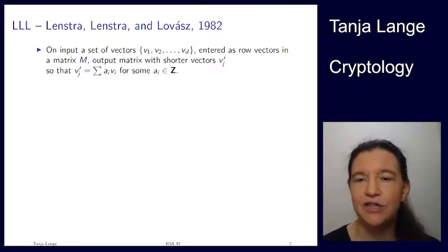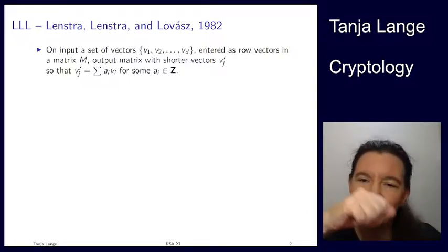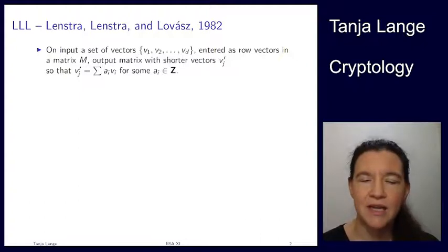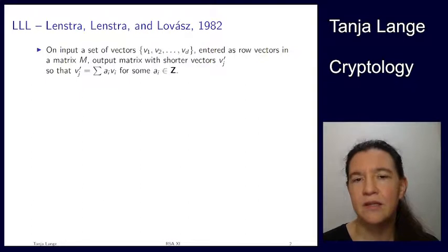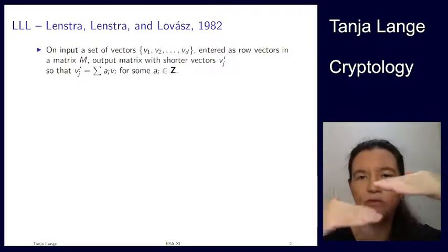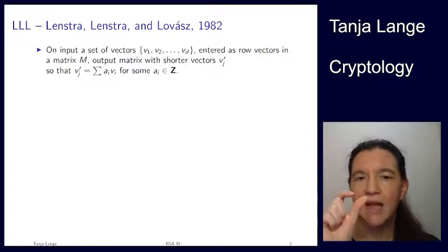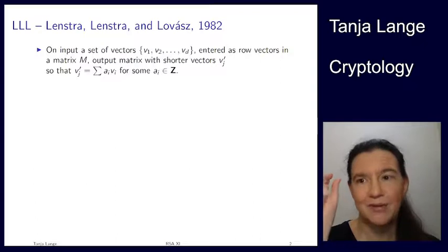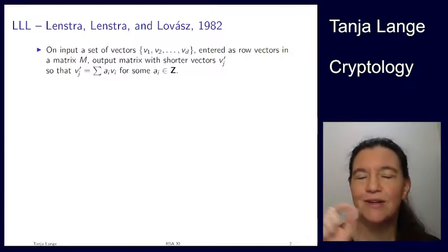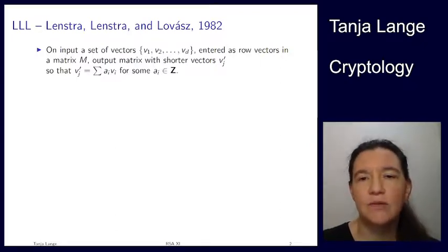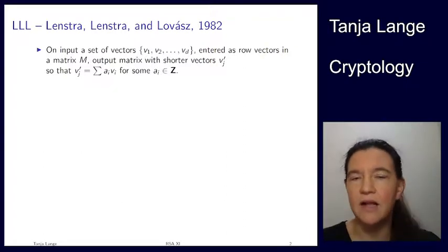Let me start by explaining a little bit about LLL. In the last lecture we were going to use this as a black box — I want to open the lid a little, not much. What we're giving it is a set of vectors over d-dimensional space: d vectors of length d, entered as rows of a matrix. We run LLL as a black box and it outputs a matrix with shorter vectors.